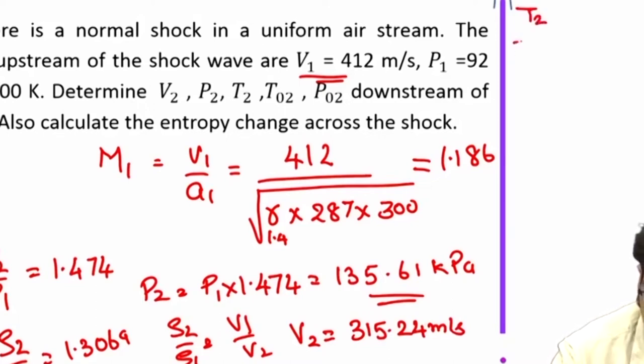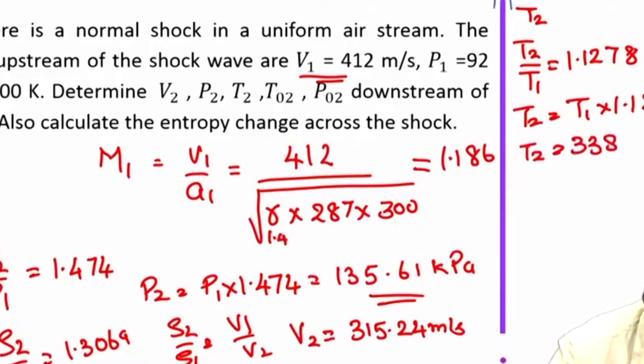Then what about T2? T2 by T1 is 1.1278 for this Mach number and corresponding to this you can get T2 is equal to 338.35 Kelvin.